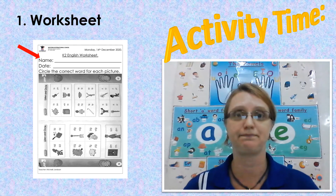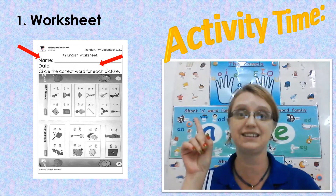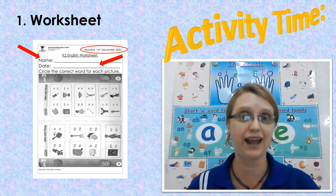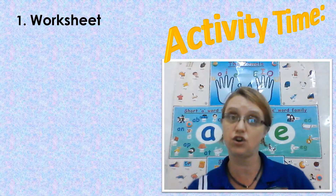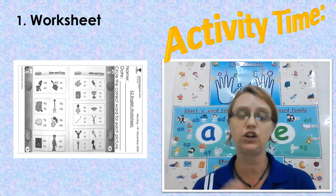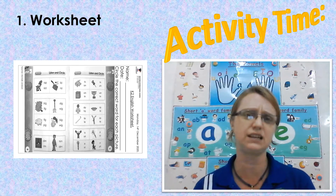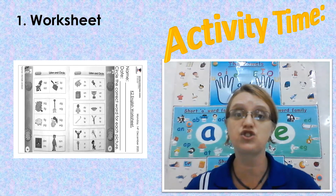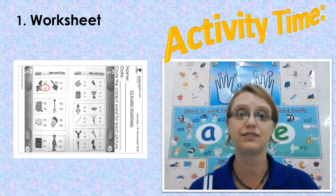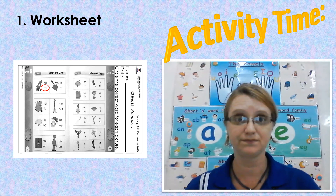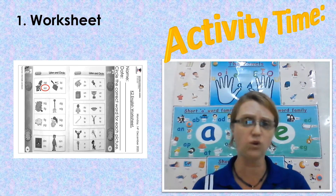So let me explain to you quickly. Activity number one is your worksheet. Step one, write your name. Step two, copy the date. Can you see it there with a big red circle? That is your date — copy it underneath your name. Then you need to turn your worksheet because it is laying on its side. You're going to look at each picture and next to each picture there are two words. Look at the picture and circle the correct word. You do that for all the pictures.